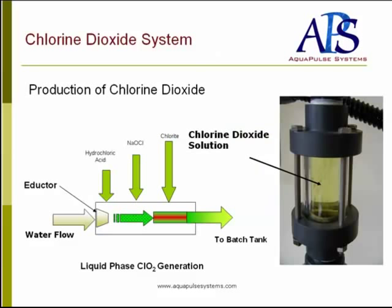The three-chemical system actually combines the three chemicals — sodium chlorite 25%, sodium hypochlorite 12.5%, and 15% hydrochloric acid — together in a water stream, causing a vacuum that pulls the chemicals in together. This is an infinitely safe system, since if the water shuts off, it will stop pulling the chemicals in and stop making chlorine dioxide. The chlorine dioxide is safely routed to a batch tank from where it's distributed to the process.